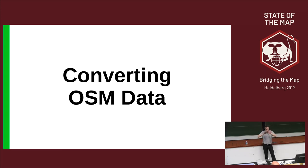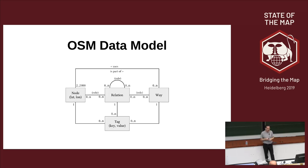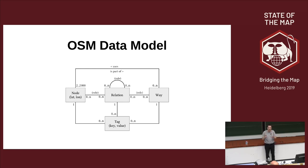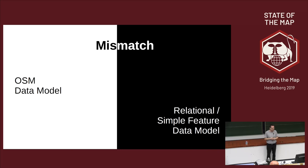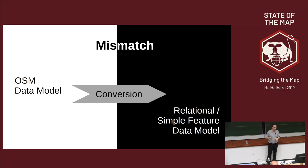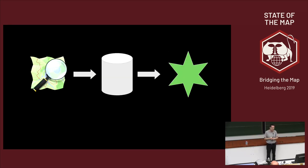Now that we know about the database and geometry, how do we get OSM data into the database? The OSM data model has nodes, ways, relations, and tags, and this doesn't always fit neatly. There is a mismatch between the OSM data model, the relational data model, and the Simple Feature model that PostGIS uses, so we need some kind of conversion.